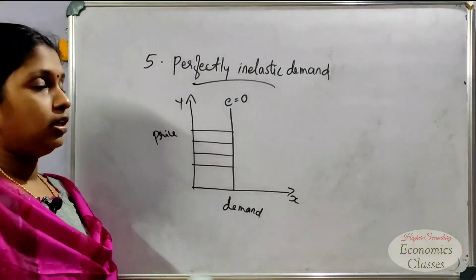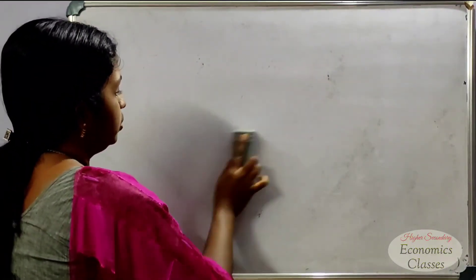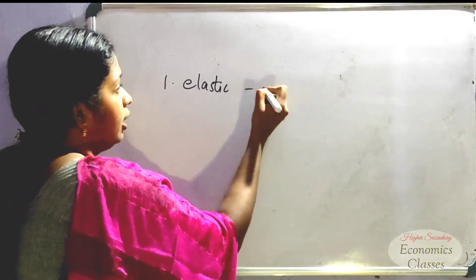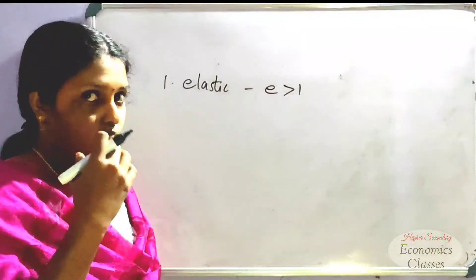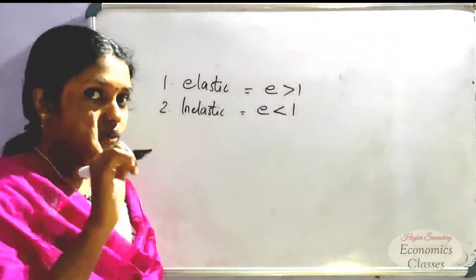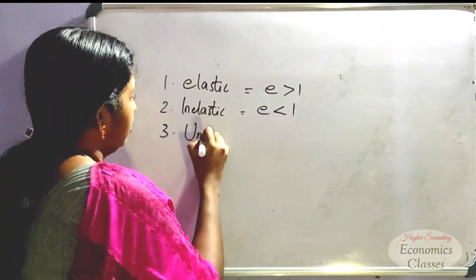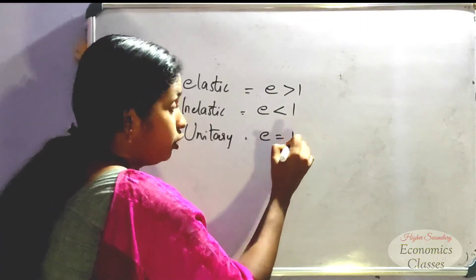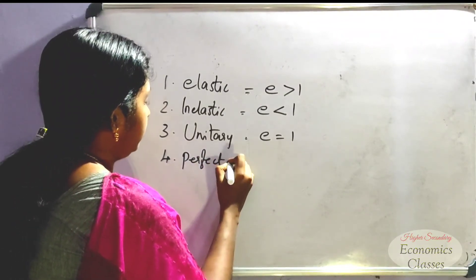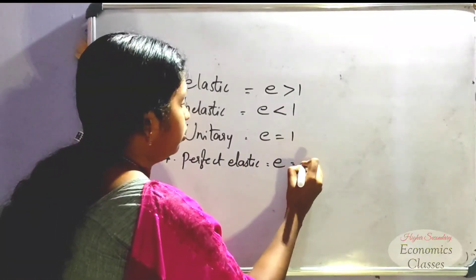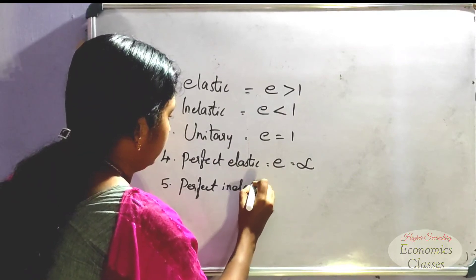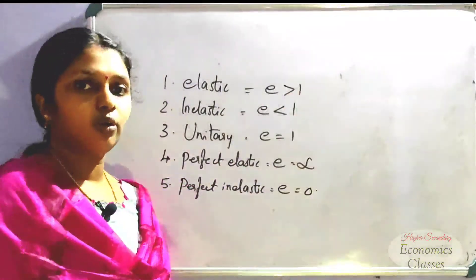Now we have learned the 5 degrees of elasticity of demand. First, elastic demand — E is greater than 1. Second, inelastic demand — E is less than 1. Third, unitary elastic — E equals 1. Fourth, perfectly elastic — E equals infinity. Fifth, perfectly inelastic — E equals 0.